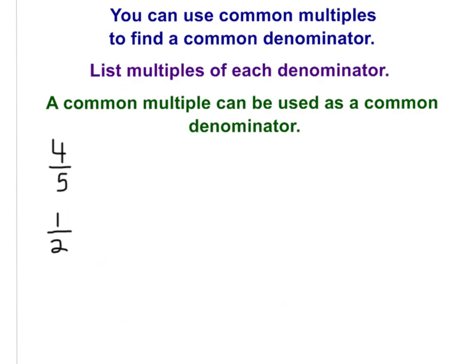So remember, you can use common multiples to find a common denominator. Step one: list your multiples of each denominator. Step two: a common multiple can be used as a common denominator. So let's look at four-fifths and one-half.